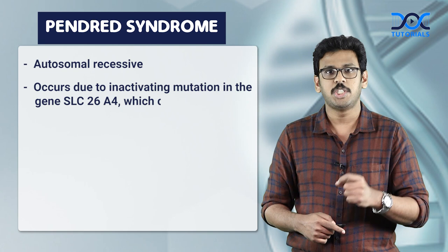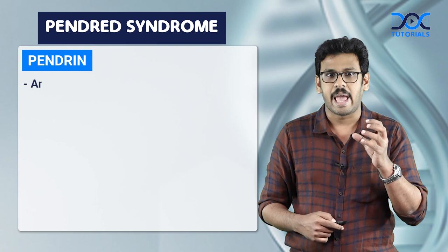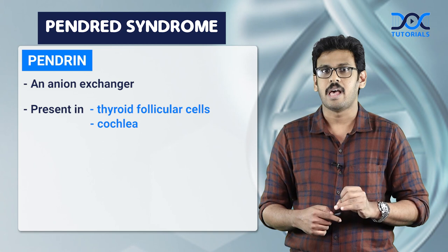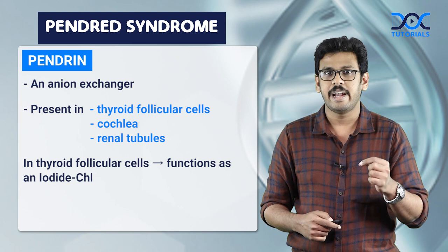What is Pendrin? It is an anion exchanger which is present in the thyroid follicular cells, in the cochlea, and in renal tubules. In the thyroid follicular cell, it functions as an iodide-chloride transporter.